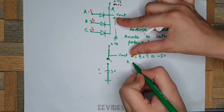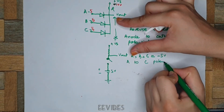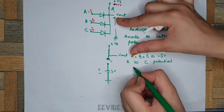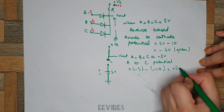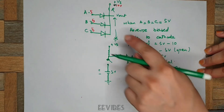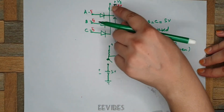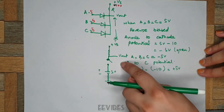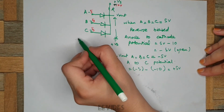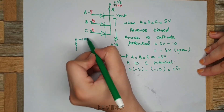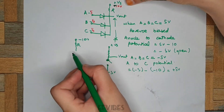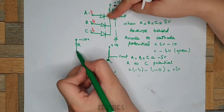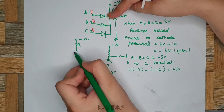If we calculate the anode-to-cathode potential when all inputs are the same: minus 5 minus (minus 10) equals plus 5 volts. Since all inputs are the same, equal potential difference exists across each diode, and all diodes will go into conduction at the same time. In the equivalent circuit, we have minus 10 volts and R, and for input A we replace the diode with a closed switch for the ideal diode, or with a battery for the practical diode model.